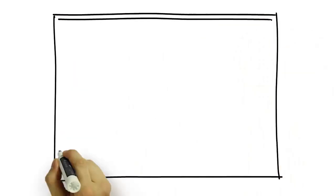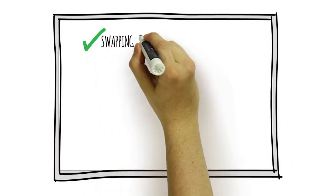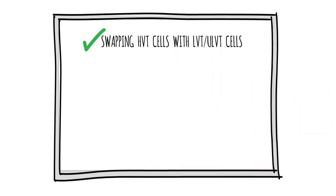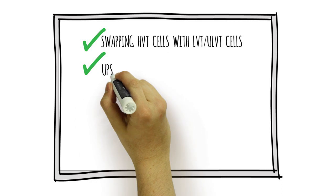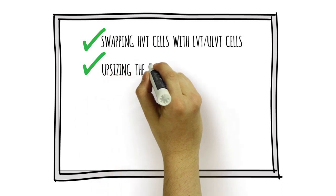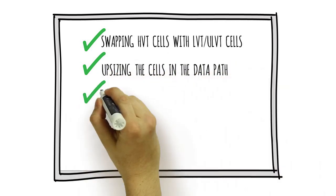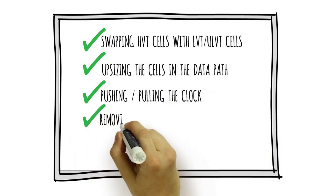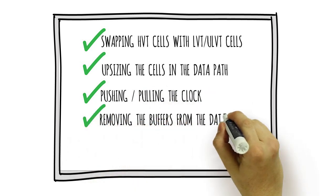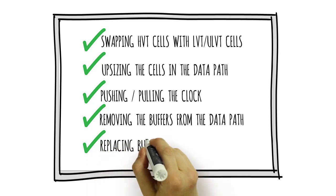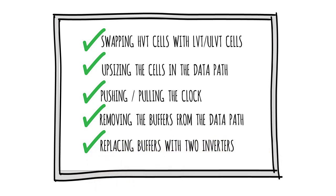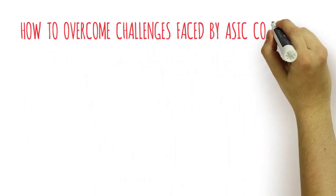Lastly, it helps achieve better timing and speed with timing setup fixing via the following steps: swapping HVT cells with LVT and ULVT cells, upsizing the cells, increasing the drive strength in the data path, pushing and pulling the clock, removing buffers from the data path, and replacing buffers with two inverters placed farther apart so that delay can be adjusted.